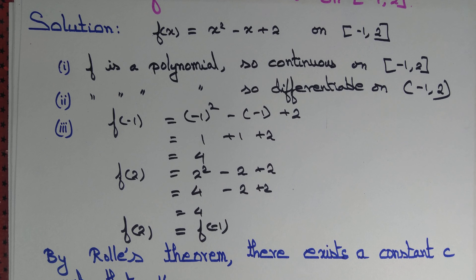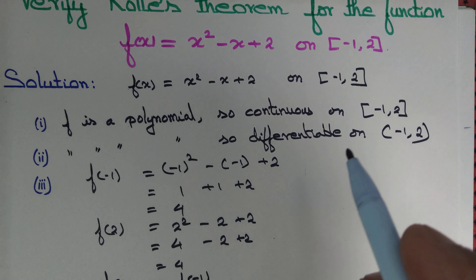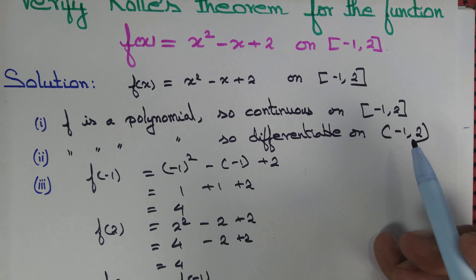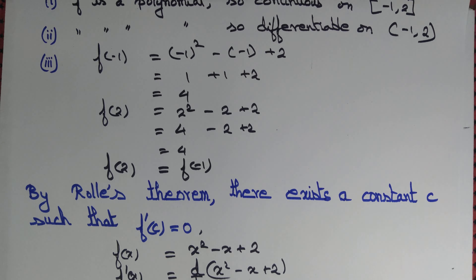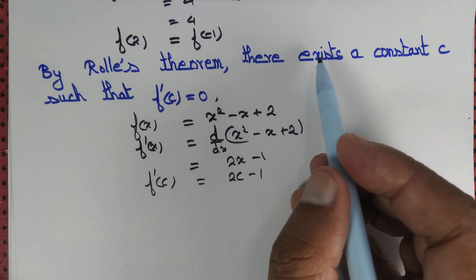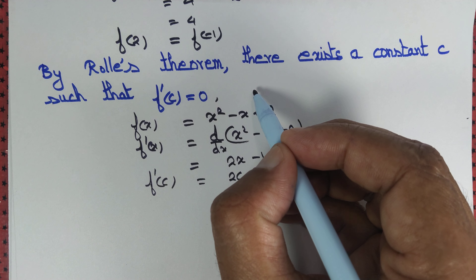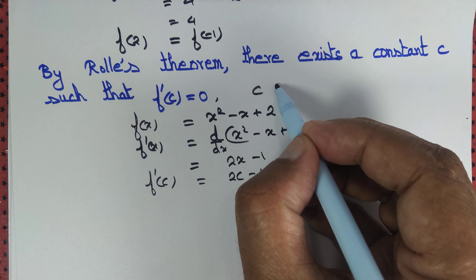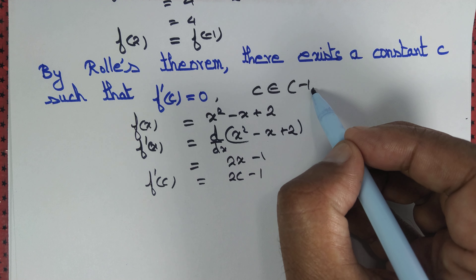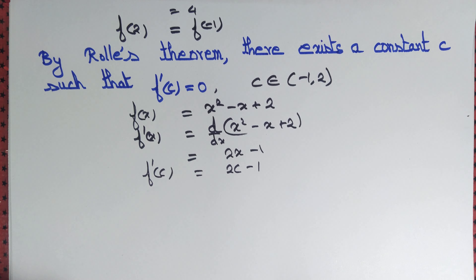That constant c must lie on the open interval (-1, 2). By Rolle's theorem, there exists a constant c such that f'(c) = 0, where c belongs to the open interval (-1, 2).